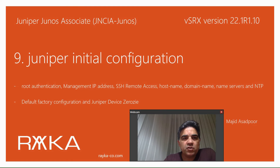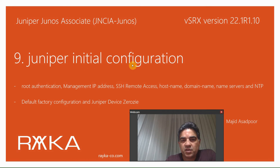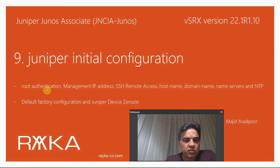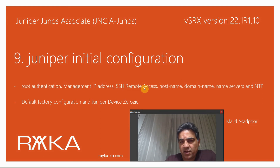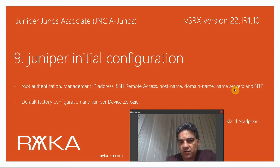Welcome to another video of the Juniper Junos Associate course. In this video, I'm going to talk about Juniper initial configuration. Initial configuration is the first step after purchasing a Juniper device. It usually includes root authentication, which is required for Juniper devices, configuring a management IP address, and enabling SSH, Telnet, or web remote access to configure Juniper devices remotely.